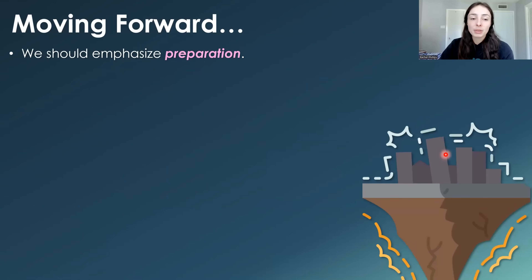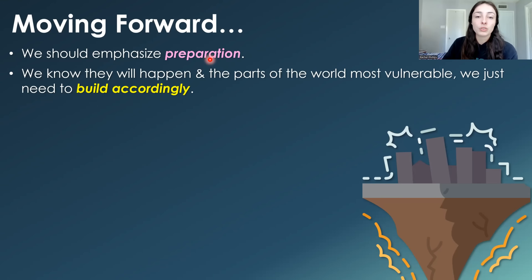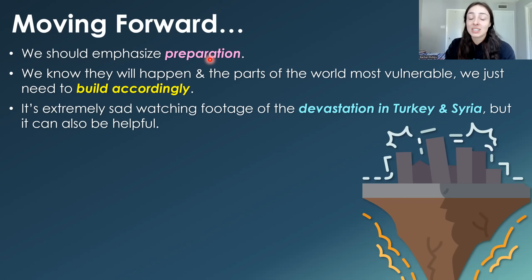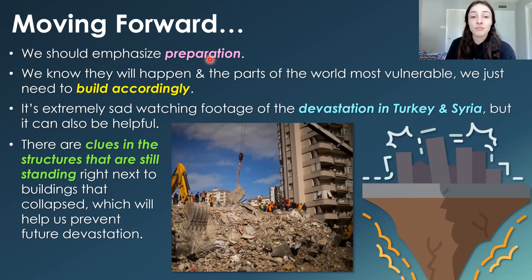Moving forward, what should we do? Probably focus on preparation. Scientists are working to improve predictions using precursor-type events, but preparation is the major thing we know we can do — because we know earthquakes will happen and we know the parts of the world most vulnerable, so we just need to build accordingly. It is extremely sad to watch the footage of devastation in Turkey and Syria, but there are clues in the buildings still standing next to the demolished ones. If we take those clues and use them to build better, more earthquake-tolerant infrastructure, we can potentially save millions of lives.